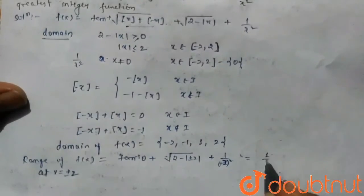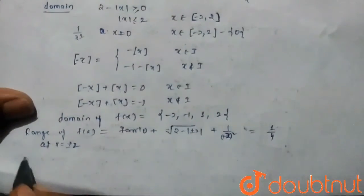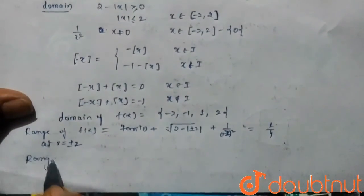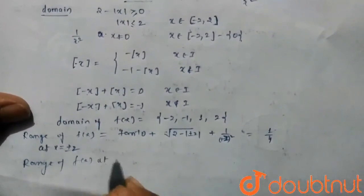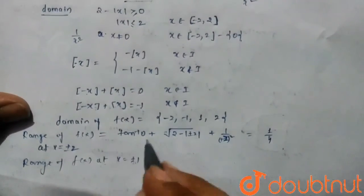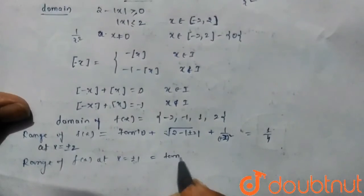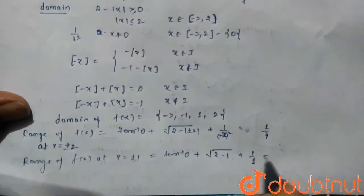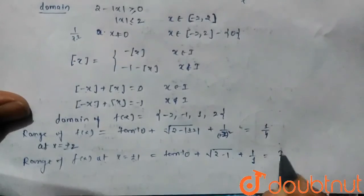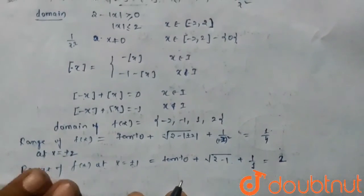And the range of f(x) at x equals to plus minus 1 is equals to tan inverse zero plus square root of 2 minus 1 plus 1 by 1, which is 2. It means the range contains only two values.